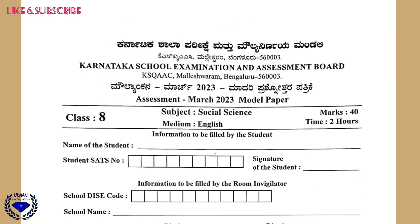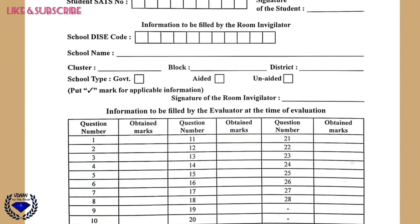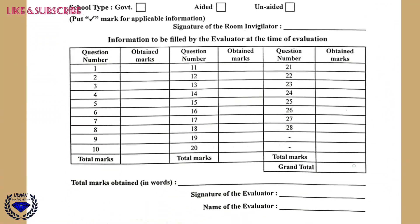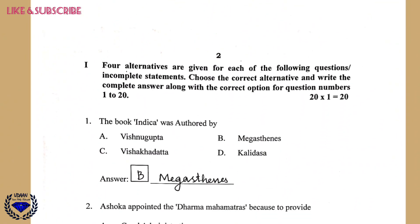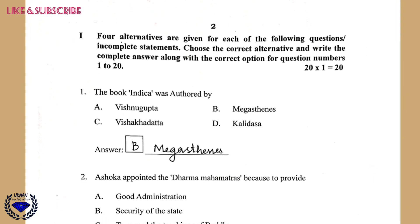Hi everyone, I am Deepak. I will be discussing the model question paper of March 2022-23 of the Social Science subject for 8th standard. I will be discussing the key answers — all the answers of the questions provided in this question paper. This question paper is issued by KSEAB, Karnataka School Examination and Assessment Board. This question paper consists of a total of 28 questions, of which 20 questions are objectives. Let us begin our discussion.